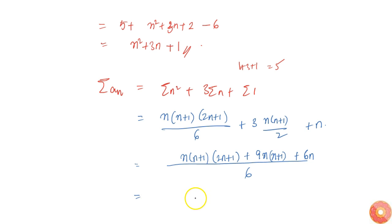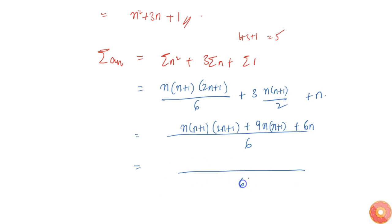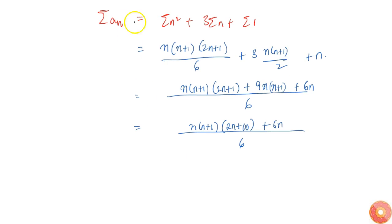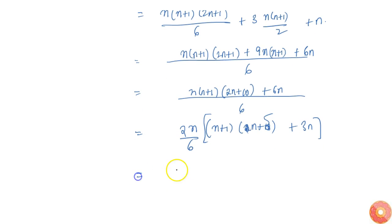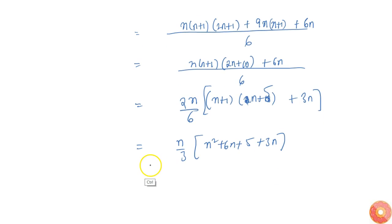Taking n common from all terms: n times [(n+1)(2n+1) + 9(n+1) + 6], all over 6. Factoring n(n+1) from the first two terms gives n(n+1)(2n+10) plus 6n, all over 6. Taking 2 common: 2n by 6, that is n/3, times (n² + 6n + 5) plus 3n, giving Sₙ = n/3 · (n² + 9n + 5). This is the sum to n terms of the series.